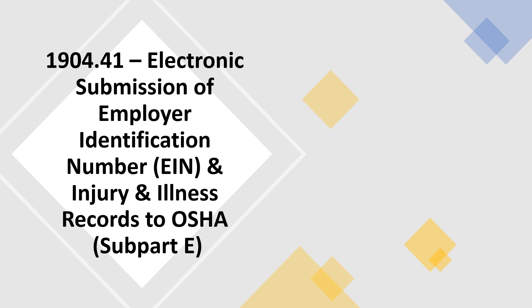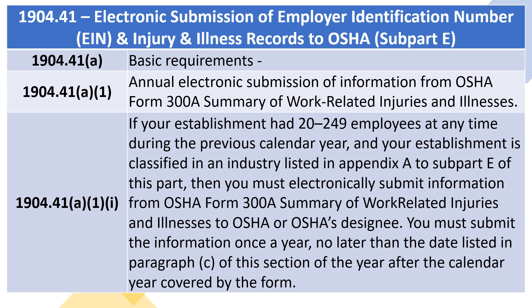1904.41 — Electronic Submission of Employer Identification Number (EIN) and Injury and Illness Records to OSHA. 1904.41(a) Basic Requirements.